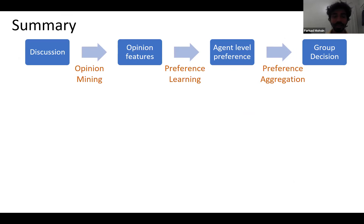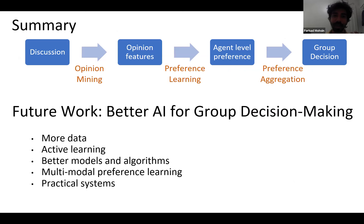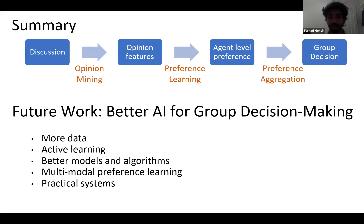To summarize: this is our framework for preference learning and aggregation from natural language, and we're continuing in this direction with the high-level goal of better AI for group decision making. We're working on gathering more data — we created our own dataset when we couldn't find an existing one. Future work includes better models, more data, and expanding to multimodal preference learning using speech, gesture, or other modalities.